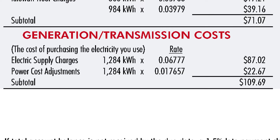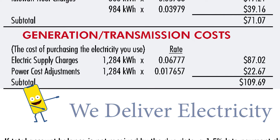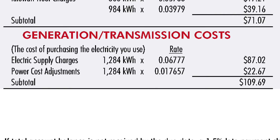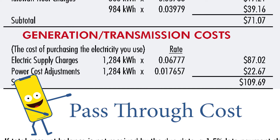Jumping down to the generation transmission costs — we don't actually generate electricity, we just deliver it. So these generation and transmission costs are equal to the amount we pay our power provider when purchasing electricity to deliver to your home. This is called a pass-through cost because we charge you only the amount we pay for the power.